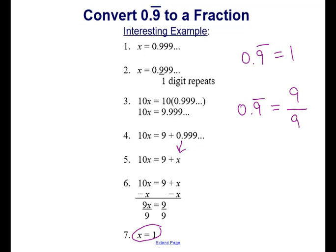So that would turn into the fraction 9 over 9. But that still supports that 0.9̄ equals 1, because 9 over 9 simplifies to 1.